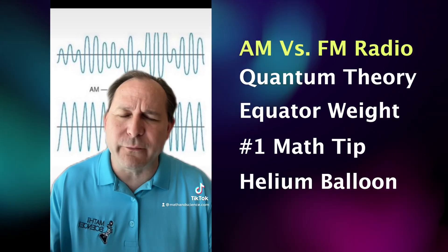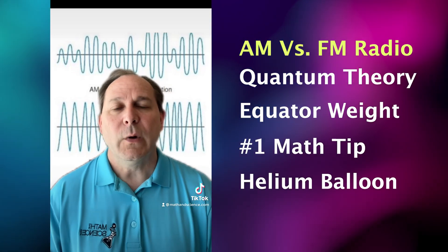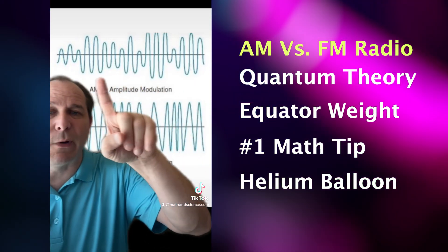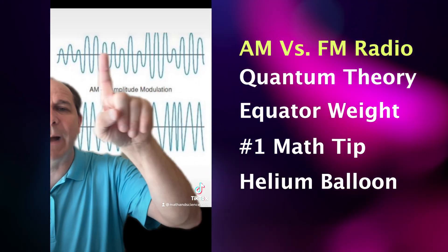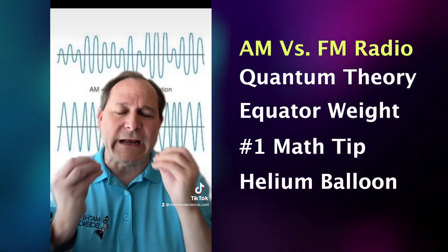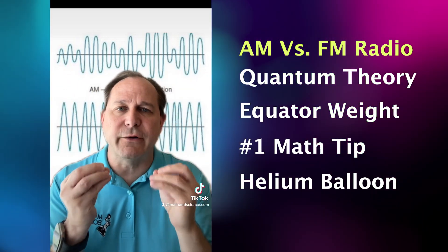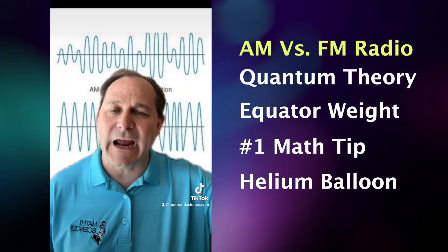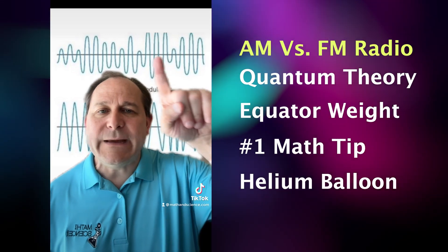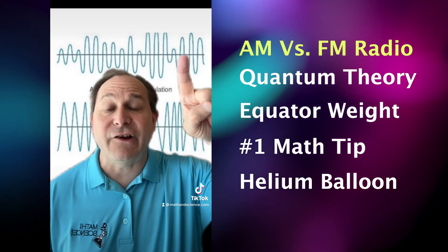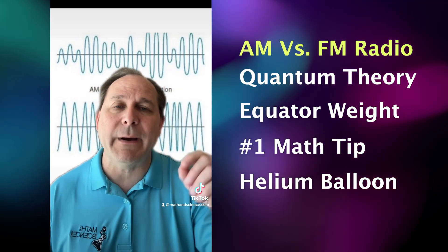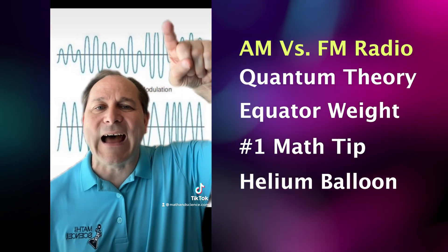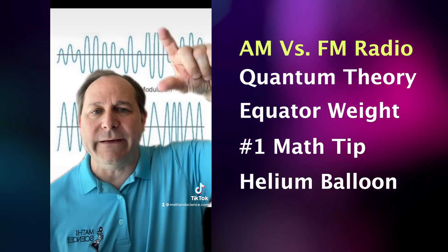But beyond the words, what does it actually mean? AM — amplitude modulation — is represented in the top graph here. When I speak into the microphone and it's sent out into the air as an electromagnetic wave, the information is actually carried by changing the amplitude. The amplitude is the height of the wave.